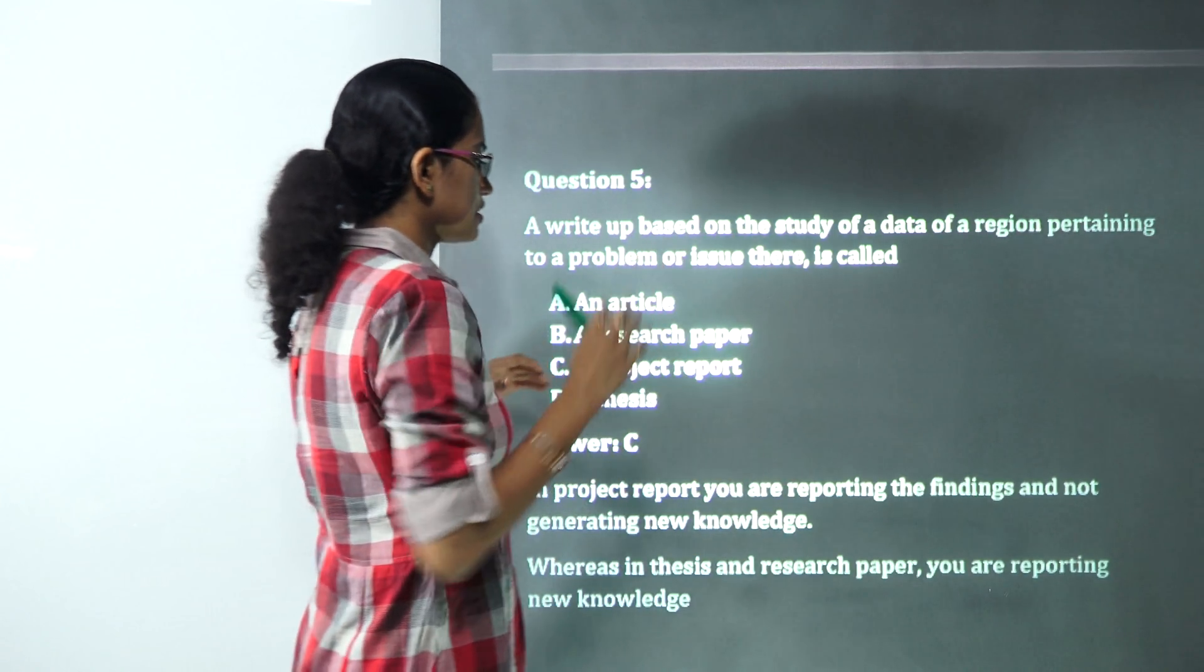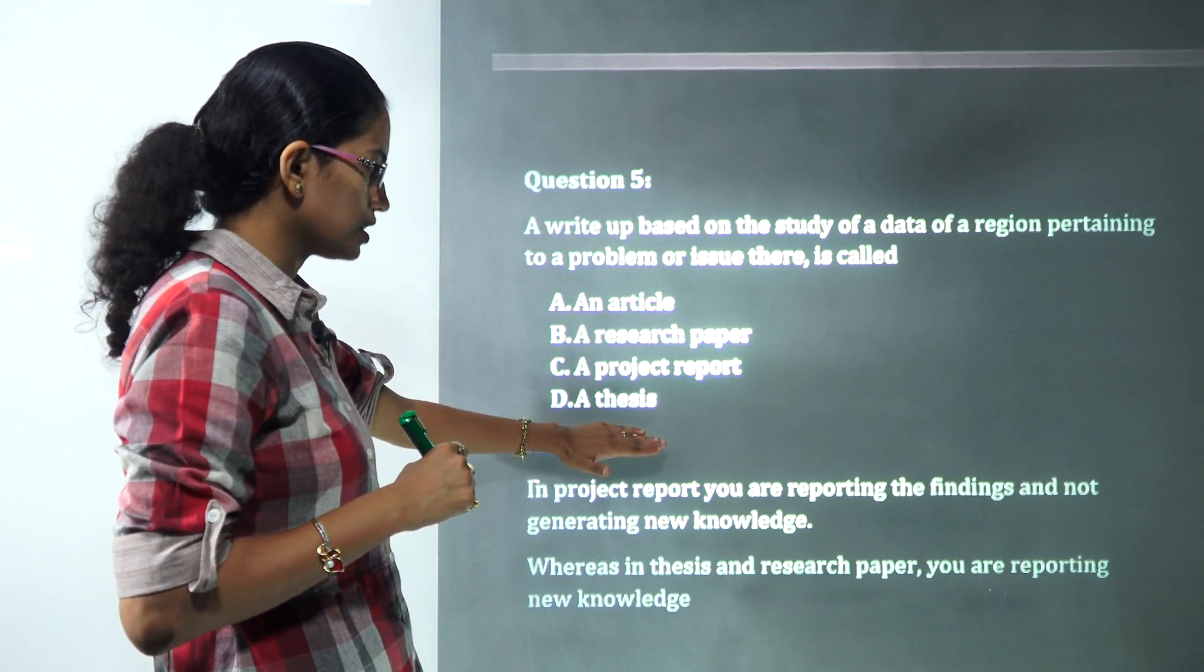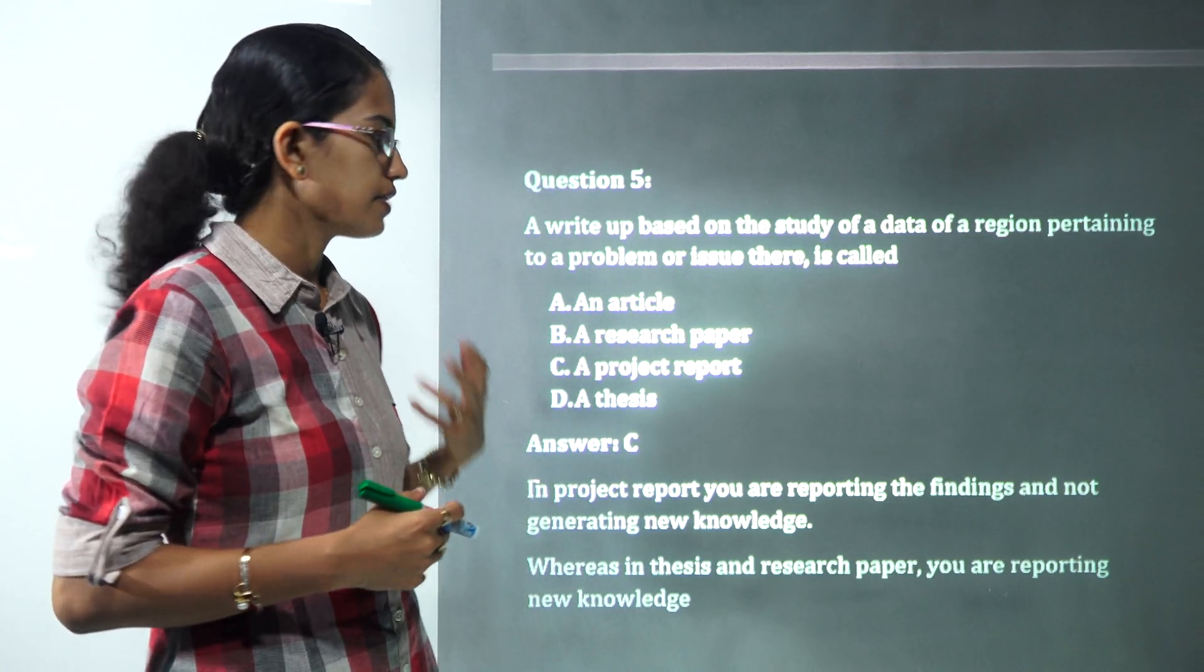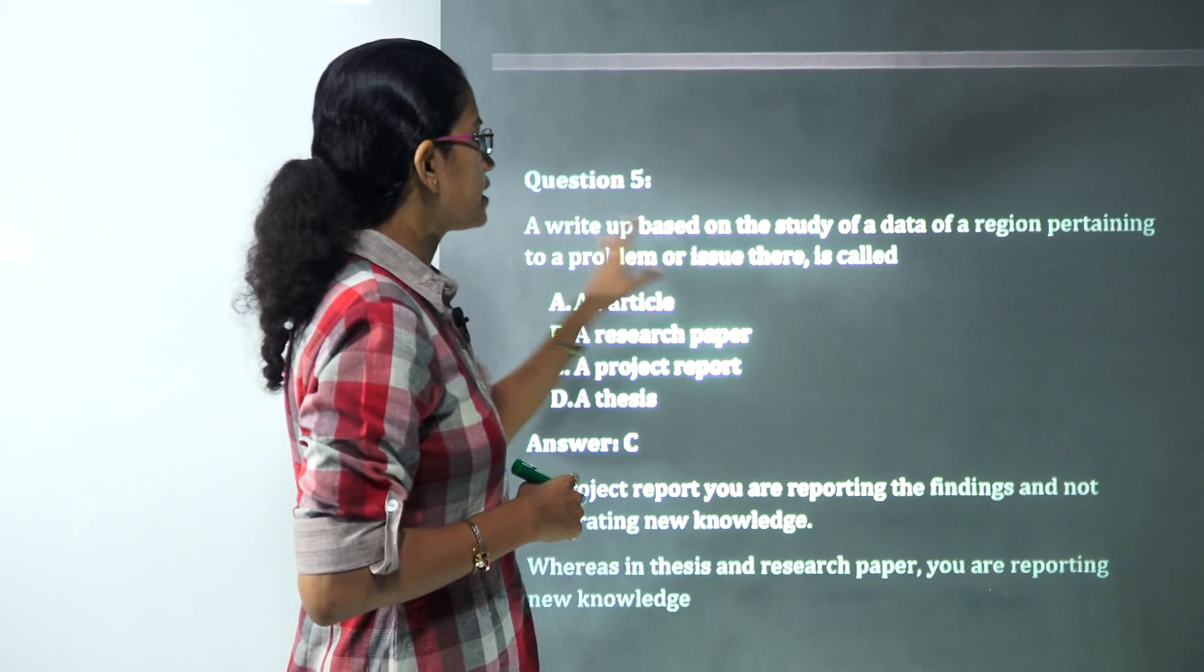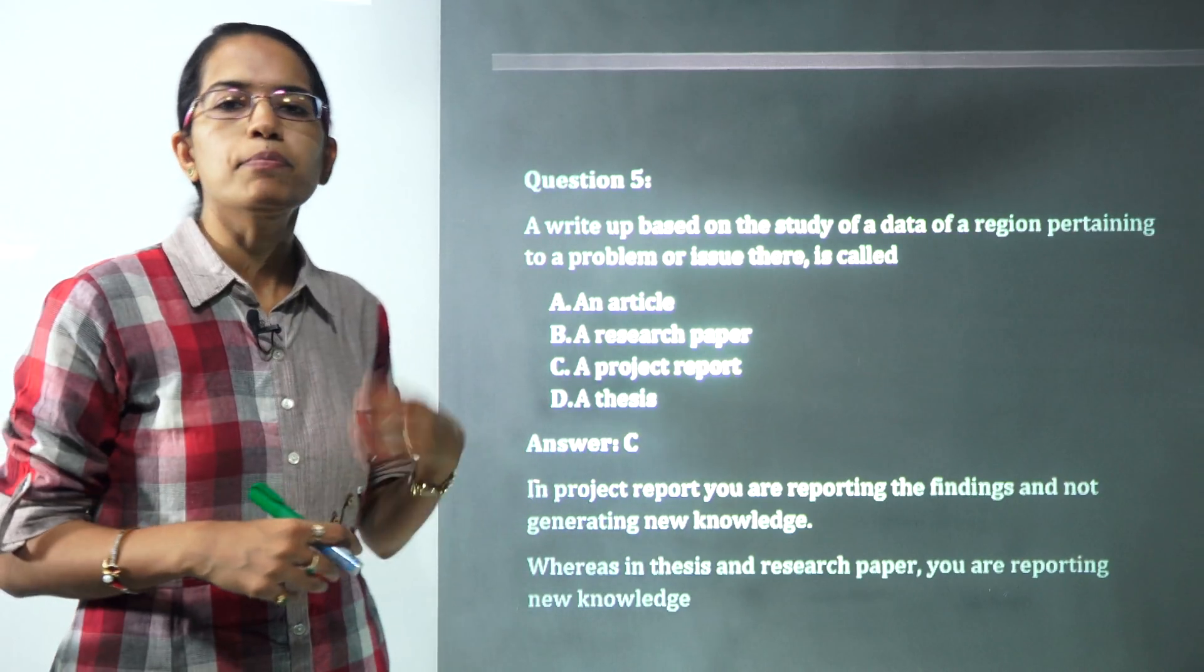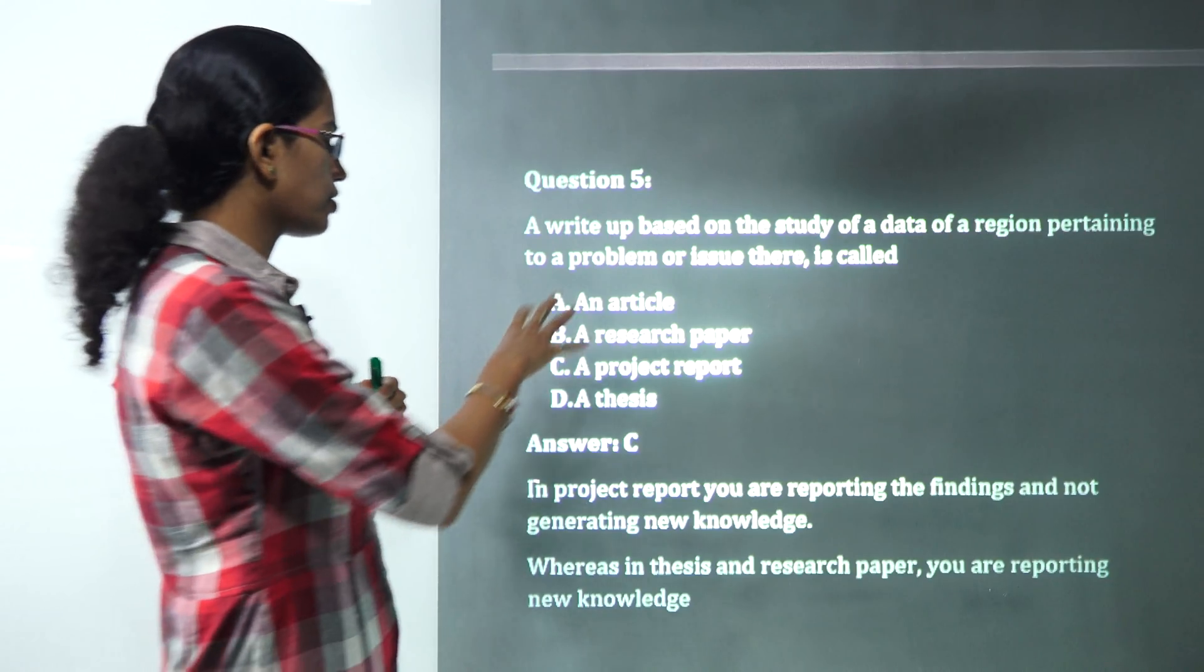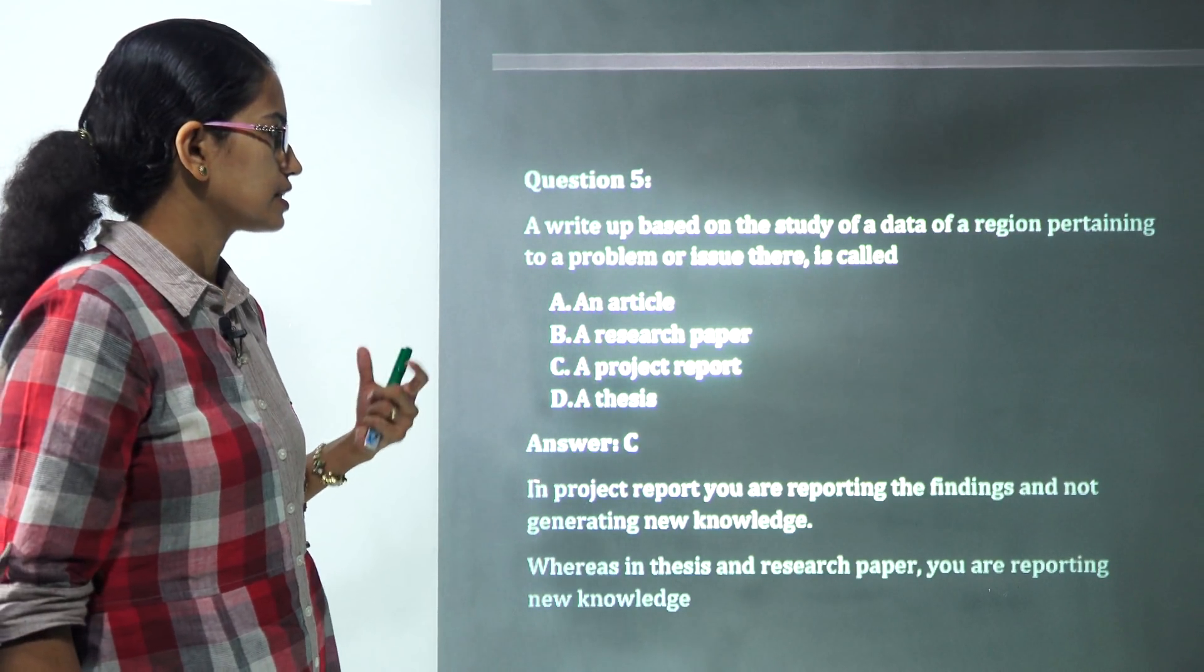The next is, again, a very interesting question. You need to understand the difference between article, research paper, project and thesis. Thesis and research paper is basically a kind of innovative idea or a new idea that you are reporting, a new knowledge. However, a write-up based on the study of a data pertaining to a problem or an issue would be a project report. Project report would be the correct answer because you are not working around something new here. You are using the existing findings and the existing data here.